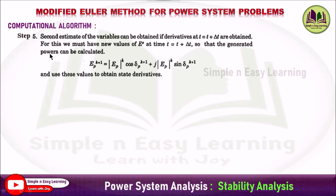Step 5 — the second estimate of the variables can be obtained if derivatives at t equal to t plus delta-t are obtained. For this we must have a new value of the voltage at time t equal to t plus delta-t so that the generated power can be calculated. The new value of voltage is: Ep power k+1 equals Ep power k times cos(delta-p power k+1) plus j times Ep power k times sin(delta-p power k+1). Use these values to obtain the state derivatives.